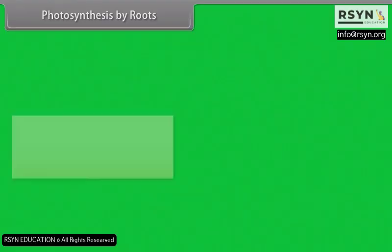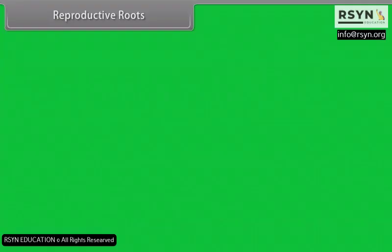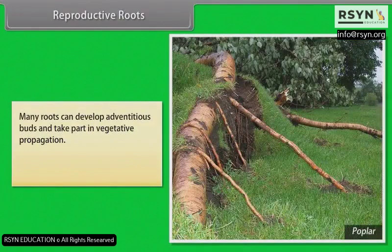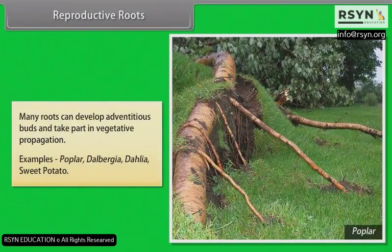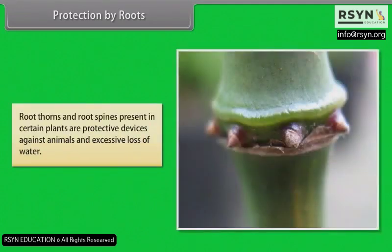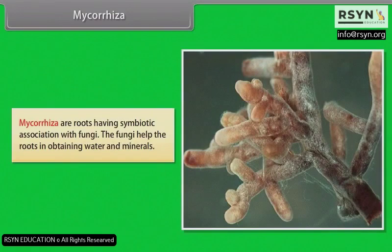Photosynthesis by roots: Roots of Trapa, Tinospora, Taeniophyllum, and Podostemum are green and photosynthetic; they synthesize organic nutrients for the whole plant. Reproductive roots: Many roots can develop adventitious buds and take part in vegetative propagation. Examples: Populus, Dalbergia, dahlia, sweet potato. Protection by roots: Root thorns and root spines present in certain plants are protective devices against animals and excessive loss of water. Mycorrhiza: Mycorrhiza are roots having symbiotic association with fungi; the fungi help the roots in obtaining water and minerals.